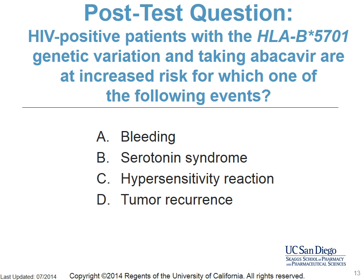Returning to the self-assessment question: HIV-positive patients with the HLA-B*5701 genetic variation and taking abacavir are at increased risk for which of the following? A, bleeding; B, serotonin syndrome; C, hypersensitivity reaction; or D, tumor recurrence? The answer is C, hypersensitivity reaction.